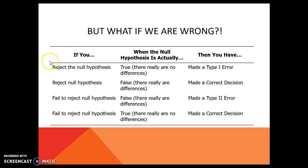If we reject the null hypothesis — so if we reject the null — then we are saying that we found a difference between two groups, male and female. Now, if in reality, so in the population, in real life, that is true — meaning there really are no differences — and in reality there is no difference between male and female, that is a type 1 error.